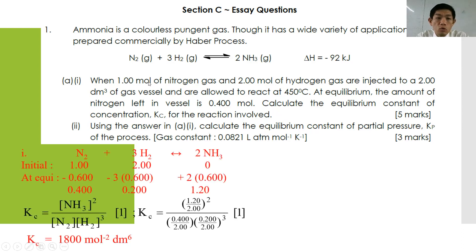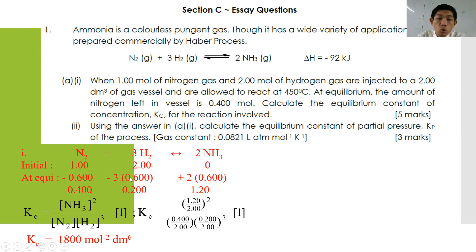First of all, you need to construct a table: N₂ + 3H₂ → 2NH₃. Initially you have 1 mol of nitrogen, 2 mol of hydrogen, and no mol of ammonia. Because the question says the amount of nitrogen left after the reaction is 0.400, the amount of nitrogen reacted is 0.6. Stoichiometrically 1:3:2, so hydrogen reacted is minus 3 × 0.600, and ammonia formed is 2 × 0.6. At equilibrium: 0.400 mol N₂, 0.200 mol H₂, and 1.20 mol NH₃.